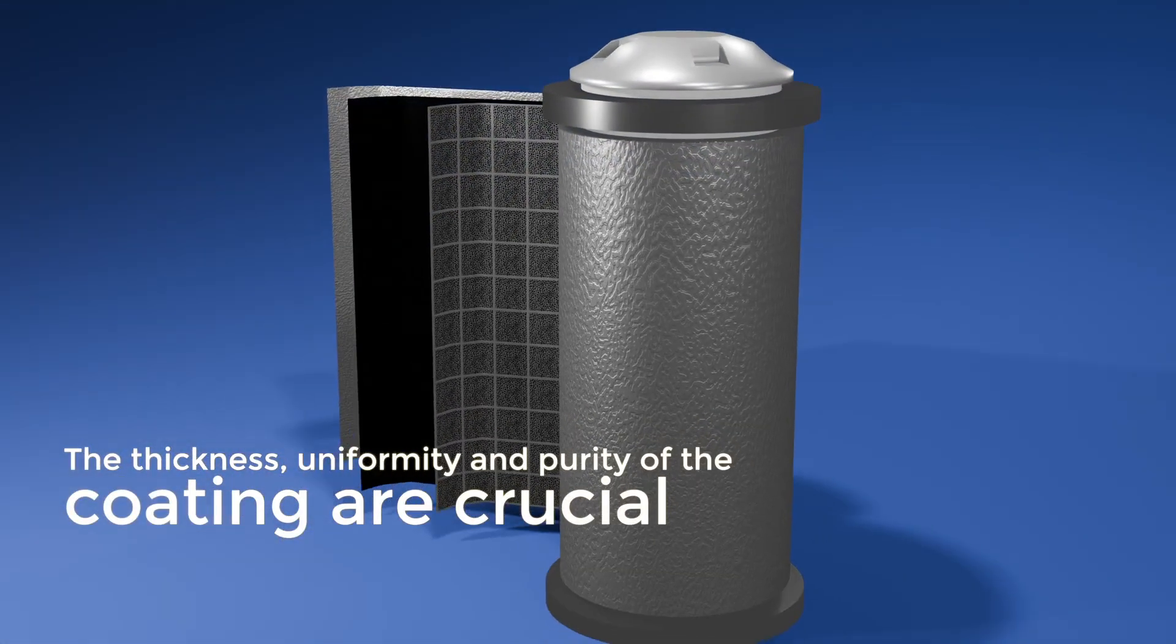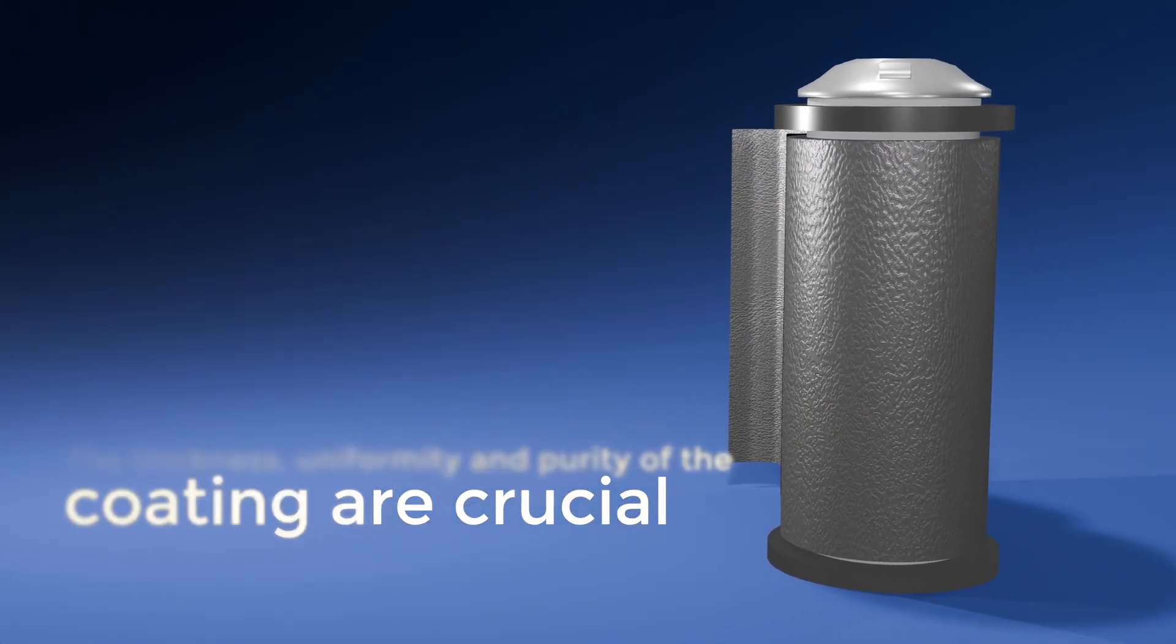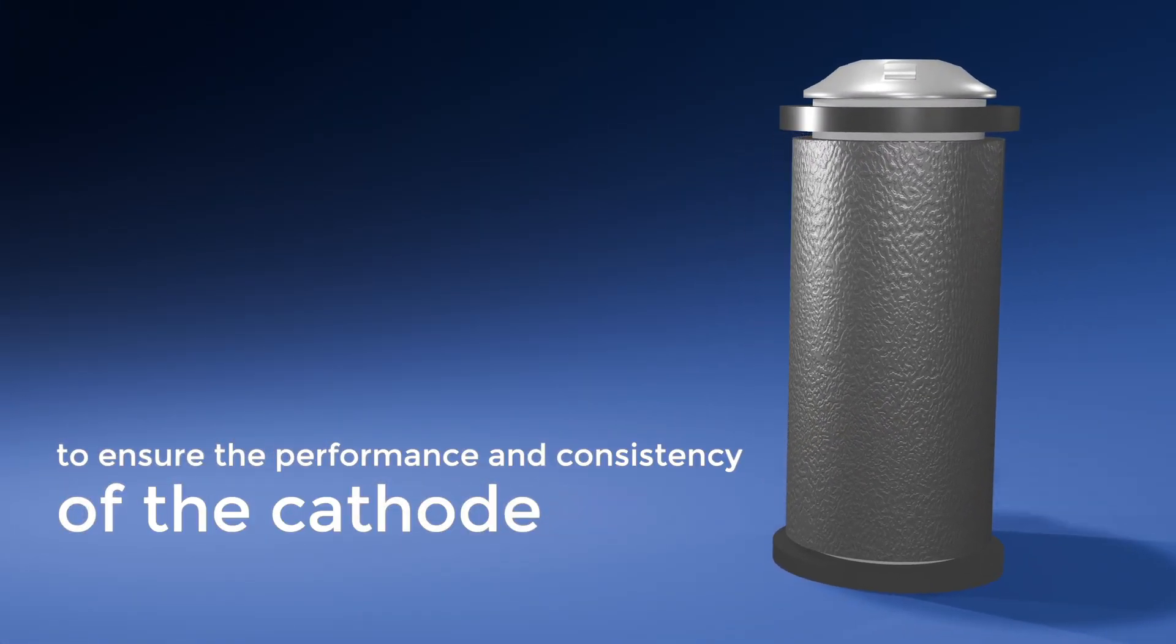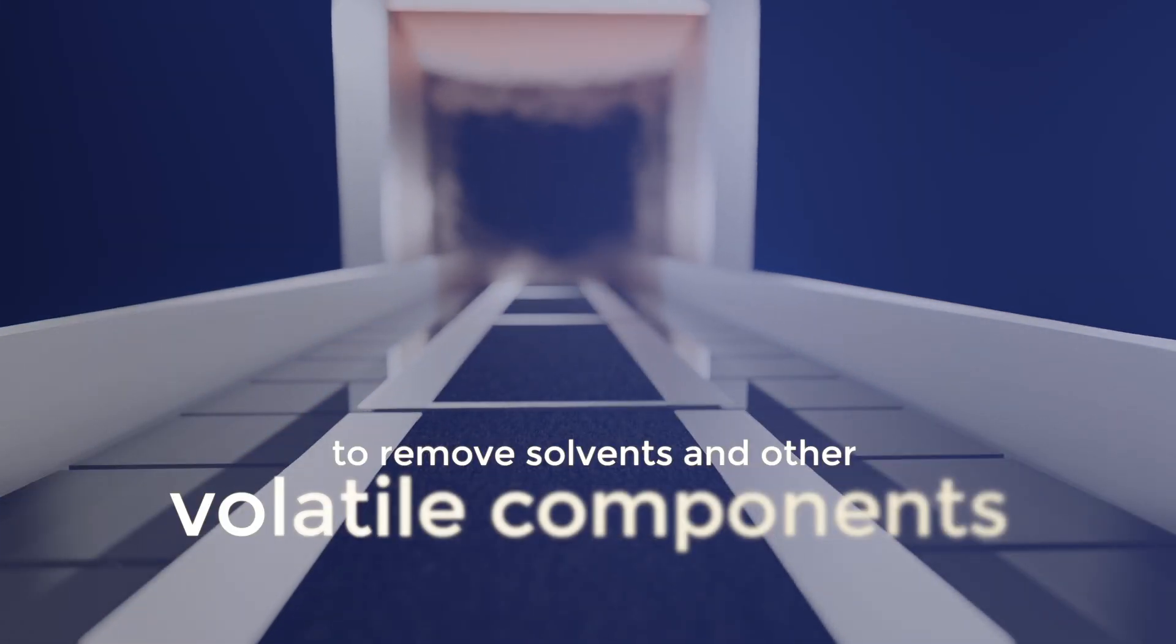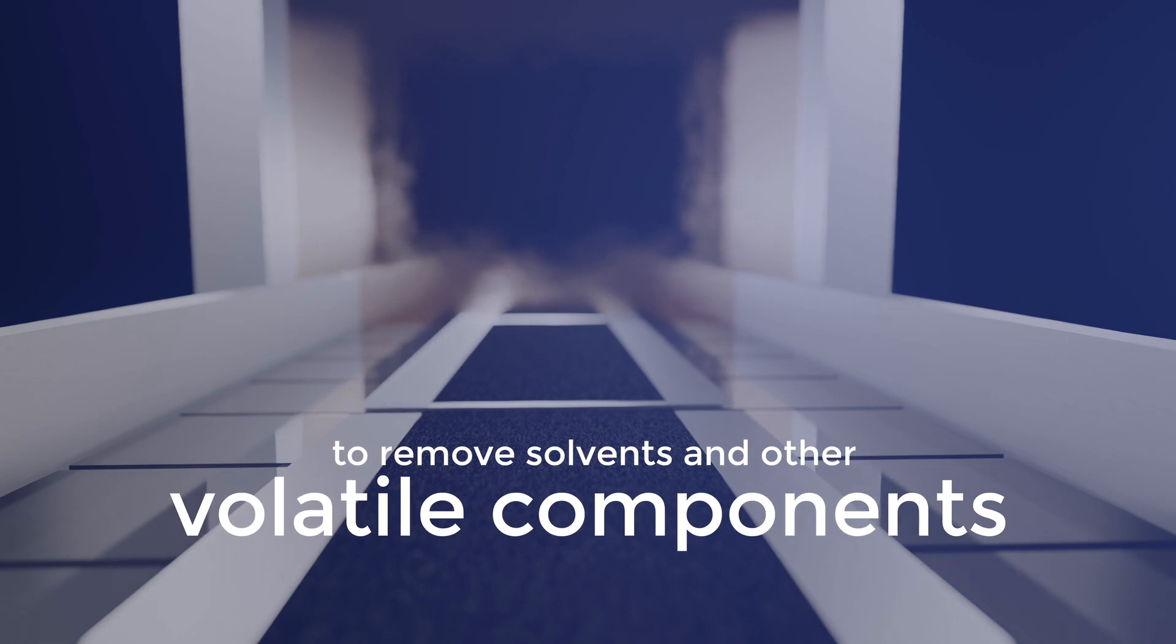The thickness, uniformity, and purity of the coating are crucial to ensure the performance and consistency of the cathode. The coated substrate is then passed through a drying process to remove solvents and other volatile components from the slurry.